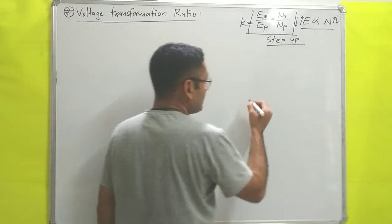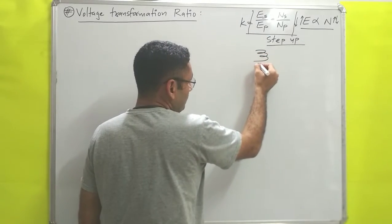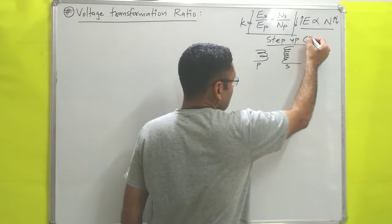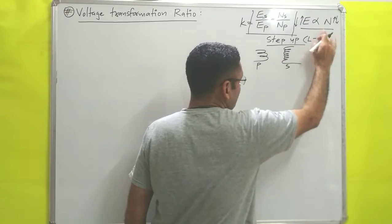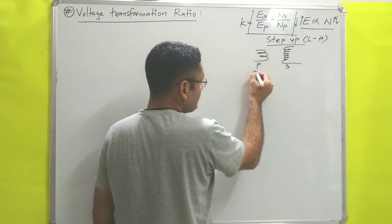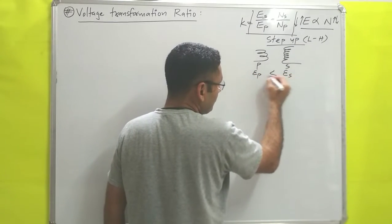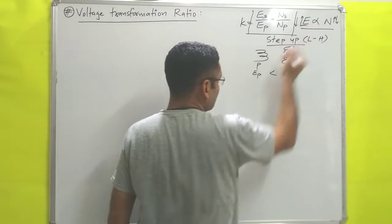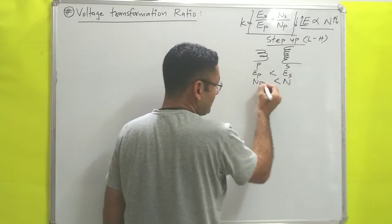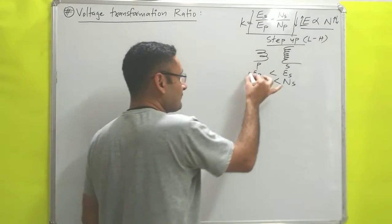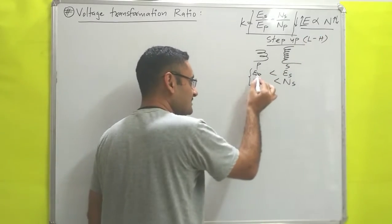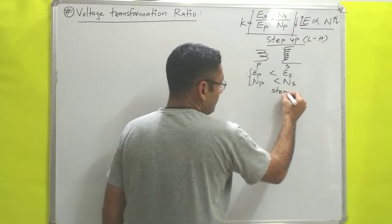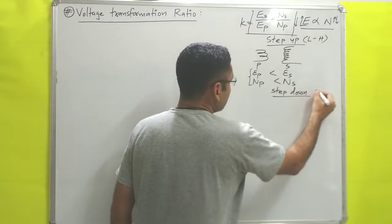For that purpose, let's recall step-up transformer. A step-up transformer has a primary side and a secondary side, and it is used to increase voltage — that is, from low voltage to high voltage. On the primary side, voltage is low, and on the secondary side, voltage is high. Since EMF is directly proportional to number of turns, the number of turns on the primary side is less than the number of turns on the secondary side.